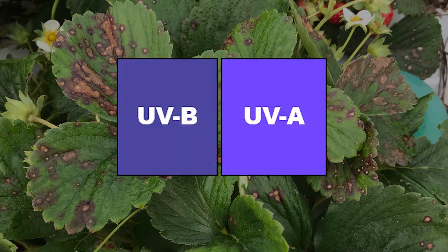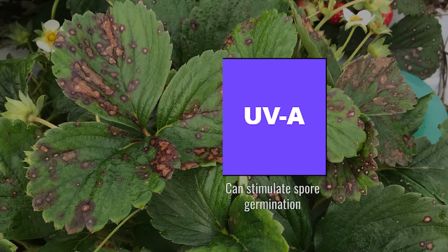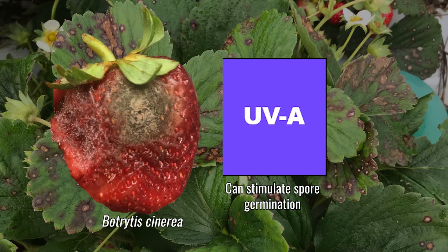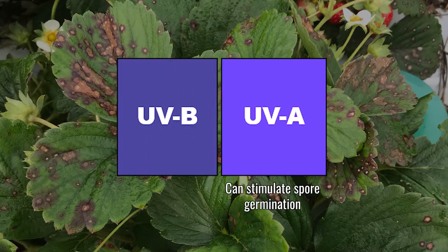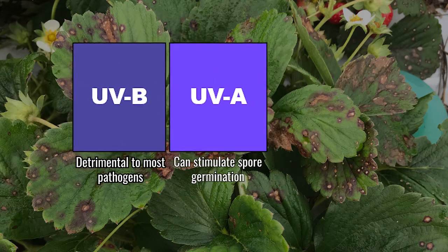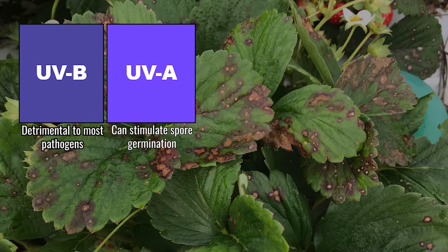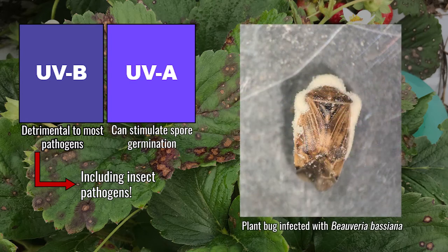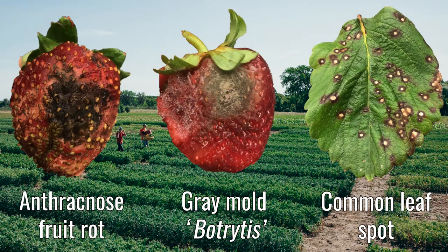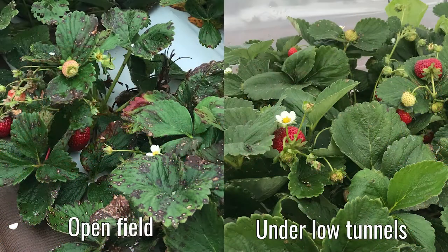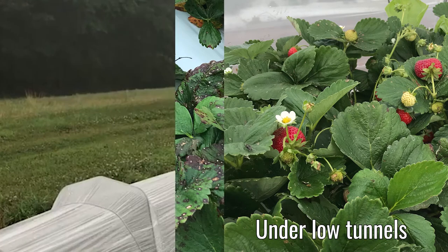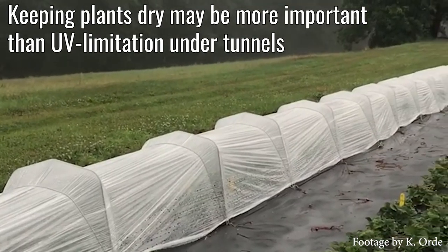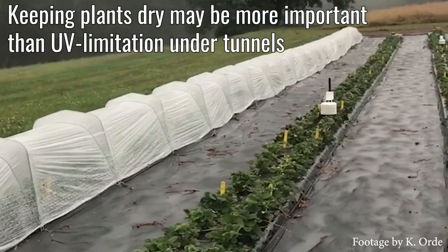Many pathogens are sensitive to UV. In general, UVA can stimulate spore germination of some pathogens, including botrytis, while exposure to UVB can harm spores of many species. This not only applies to plant pathogens, but also to insect pathogens used for biological control. For plant pathogens, lower rates of infection have been observed under plastics of all UV-limiting types. Thus, keeping plants dry appears to be more important for managing diseases than manipulating the UV environment.